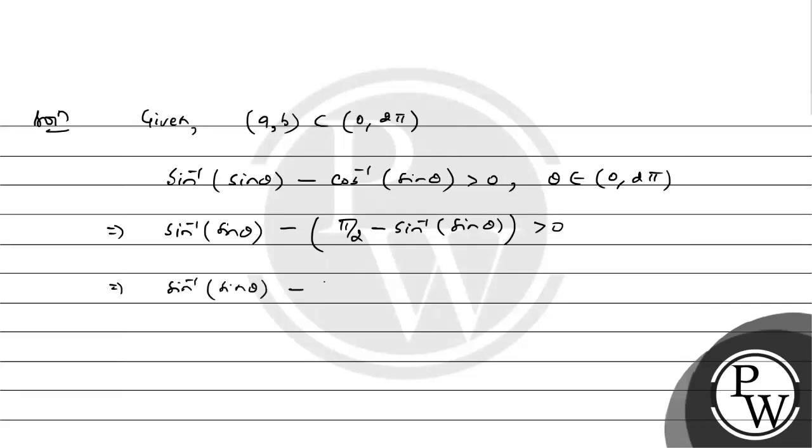sin⁻¹(sin θ) - π/2 + sin⁻¹(sin θ) should be greater than 0. This gives 2sin⁻¹(sin θ) > π/2 and sin⁻¹(sin θ) > π/4. This implies sin θ > 1/√2.